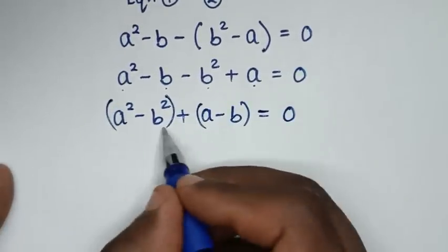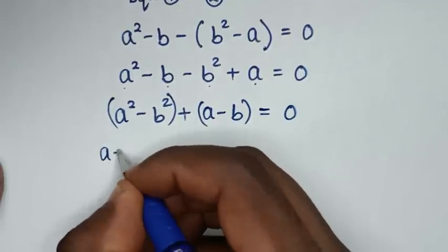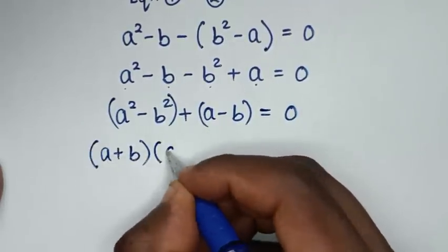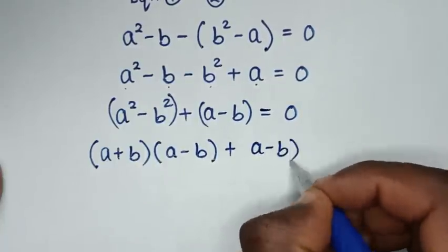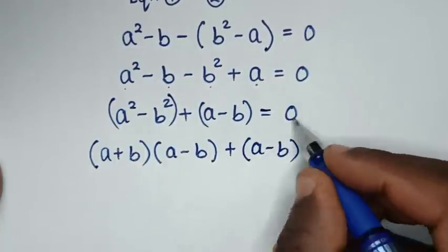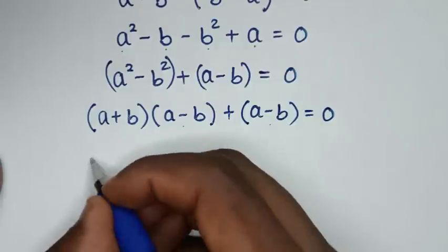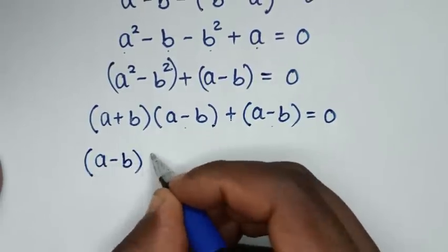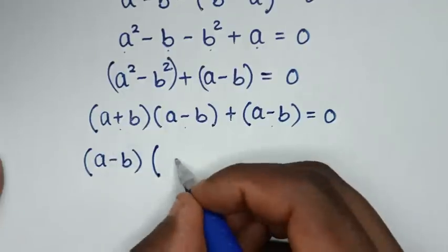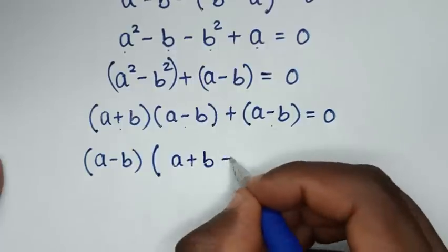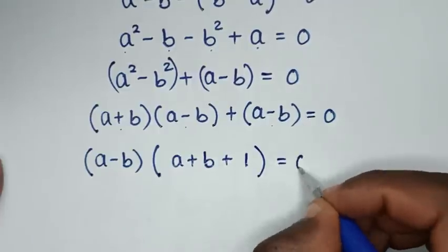The part a squared minus b squared is in the form of difference of two squares, which factors as (a + b)(a − b). So the expression becomes (a + b)(a − b) + (a − b) = 0. Factoring out the common factor (a − b), we get (a − b)(a + b + 1) = 0.